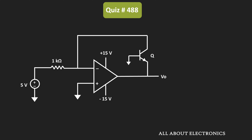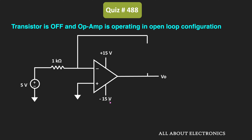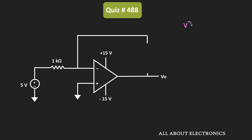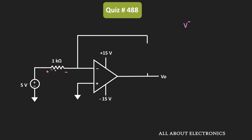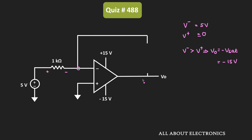Let us assume that the given op-amp is operating in the open loop condition. In this condition, the V- or inverting terminal of the op-amp is at 5V, because since no current is going into the op-amp terminal, there will be no voltage drop across the 1kΩ resistor, and the voltage at this node will be equal to 5V. The voltage at the non-inverting terminal V+ is equal to 0V. So V- is greater than V+, and therefore the output Vout is equal to -Vsat, which is -15V.